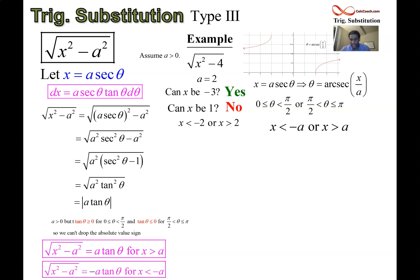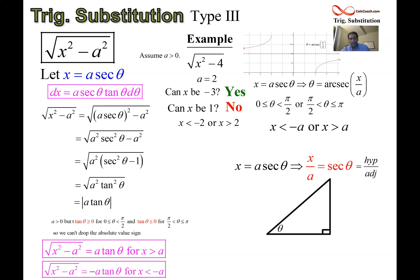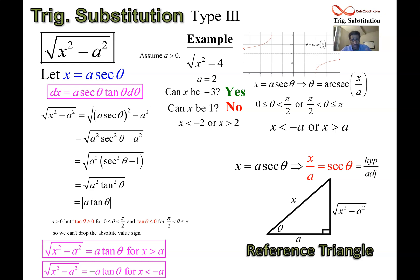The radical gets replaced with a tan theta when x is bigger than a, but when x is smaller than negative a, it becomes negative a tan theta. The reference triangle comes from the trig sub: solve for the trig function. Secant is hypotenuse over adjacent, so draw a right triangle with theta as the base angle, hypotenuse x, and adjacent side a. The missing third side is the original radical, the square root of x squared minus a squared, found by the Pythagorean theorem. The reference triangle gets you back in terms of x after finding the antiderivative.